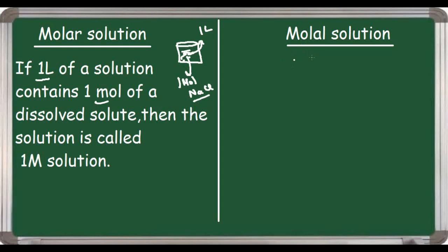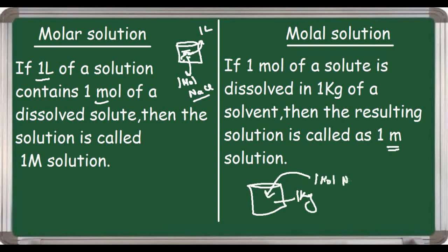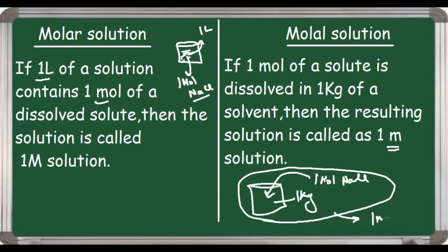Now let's move on to the molal solution. If 1 mole of a solute is dissolved in 1 kg of solvent, then the resulting solution is called a 1 molal solution. Molal is represented by small m. So the solvent amount is 1 kg, and in that you dissolve 1 mole of NaCl — the resulting solution will be 1 molal.